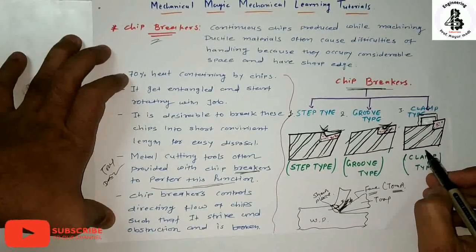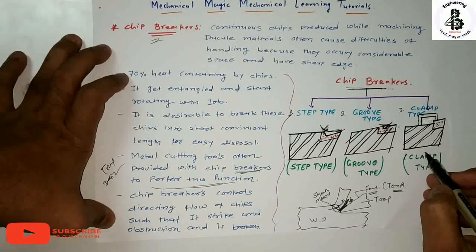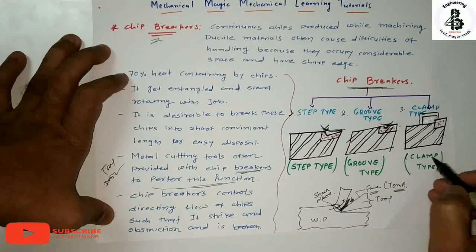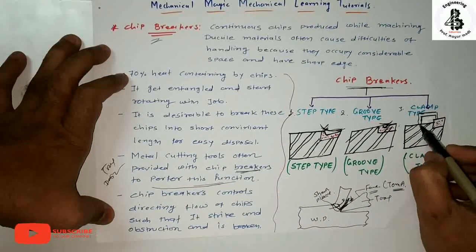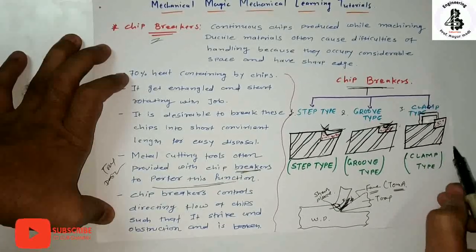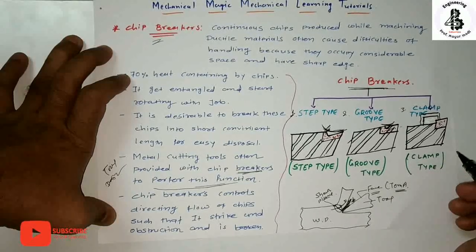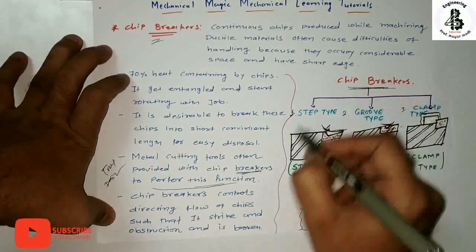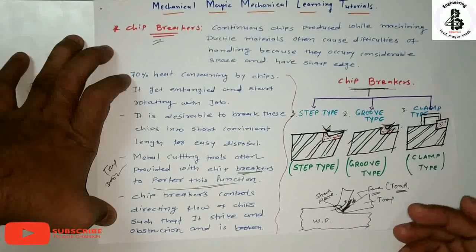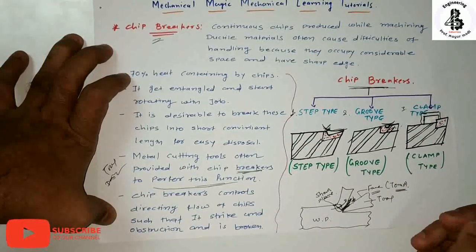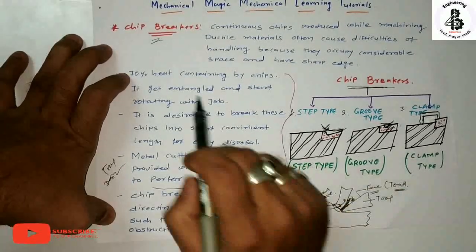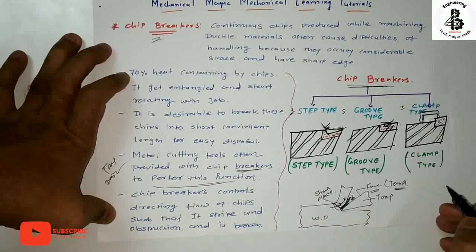Sometimes in the third category, the clamp type, it will be difficult to make a groove or step type according to the machining requirement. So one additional clamp is provided on the tool, and such a chip breaker is called a clamp type chip breaker. In all three categories, the main principle is the same: the chips strike with that particular area and break. The chips are then in the form of segments and are easily disposable. That is the importance of chip breakers in metal cutting operations.